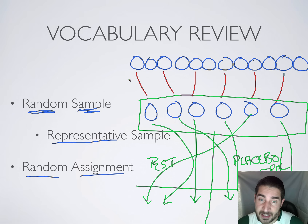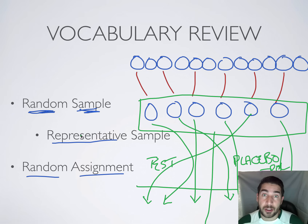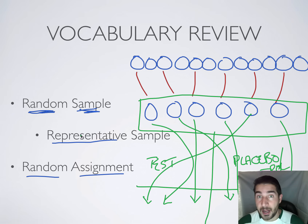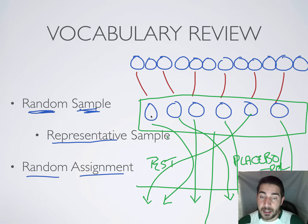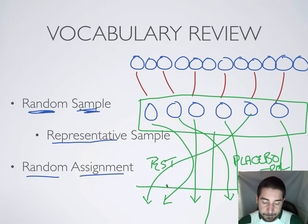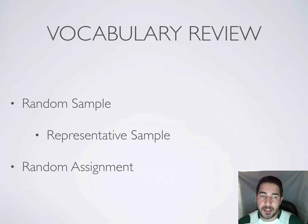Random sample comes first — you have to sample your population. Then assigning comes second. Sampling comes before assigning. Remember that. That's all I've got for today.